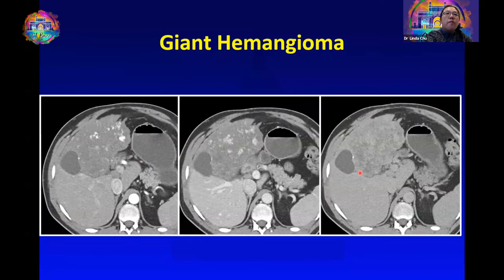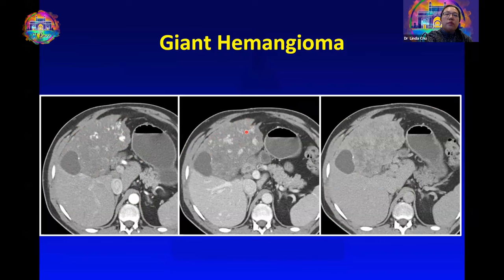With giant hemangiomas, sometimes the enhancement pattern looks a little less classic. The nodular enhancement on the arterial phase is not quite as peripheral as we are used to seeing, but at least it's following blood pool attenuation. The enhancement pattern through the venous and delayed phase images is progressive, which is a reassuring sign.